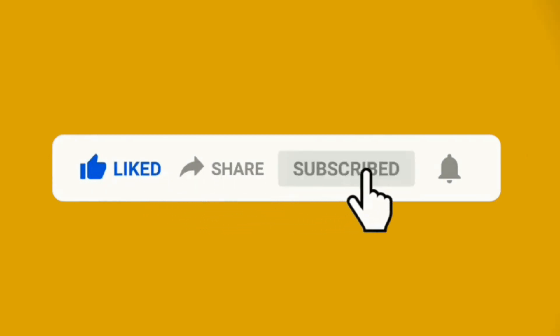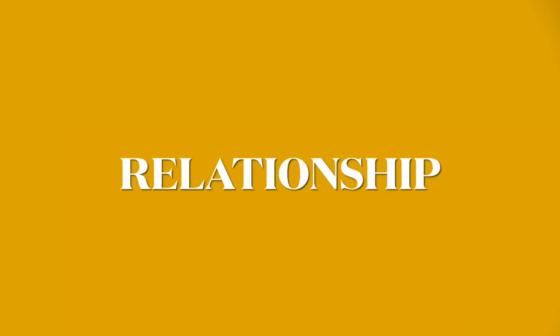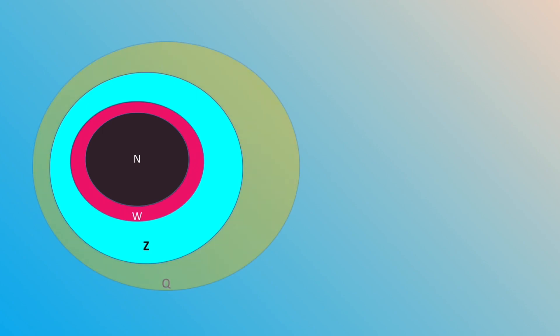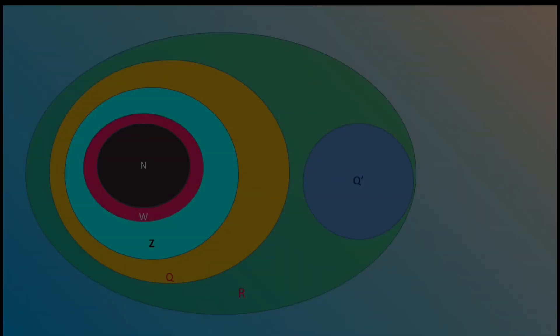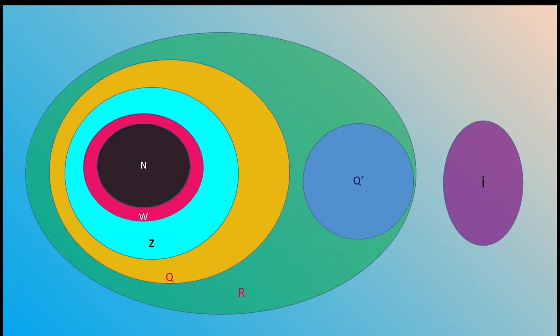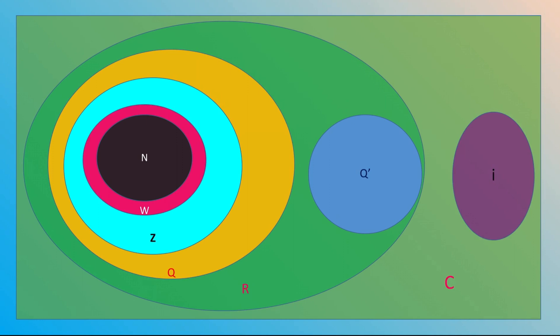Now we will discuss the relationship between different number sets. All natural numbers are whole numbers. All natural numbers and whole numbers are integers. All natural numbers, whole numbers, and integers are rational numbers. All rational numbers and irrational numbers are disjoint sets. All rational and irrational numbers are real numbers. Real numbers and imaginary numbers are disjoint sets. All real numbers and imaginary numbers are complex numbers. The converses of the earlier discussed statements are not true.